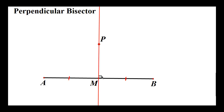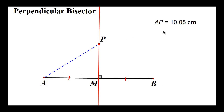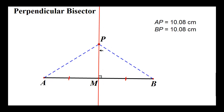Now there's a point on this perpendicular bisector, and just like with angle bisectors, there's something special about a point that lies on a perpendicular bisector. We're going to measure the distance from P to A — from point P on the perpendicular bisector to endpoint A — and we find that it's 10.08 centimeters.